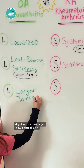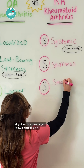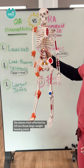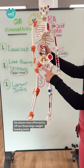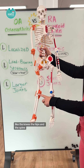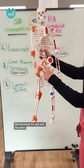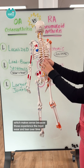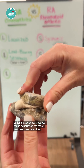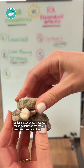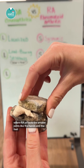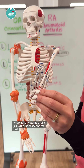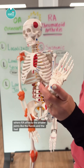Next, we have larger joints versus small joints. The places most affected by OA are those large weight-bearing joints like the knees, the hips, and the spine, which makes sense because those experience the most wear and tear over time. RA, on the other hand, affects the smaller joints like the hands and the feet.